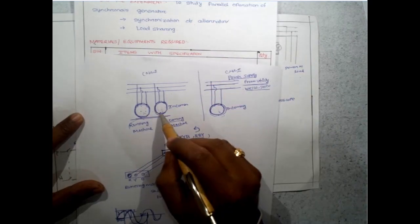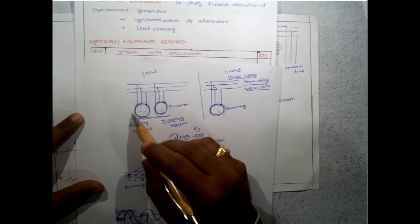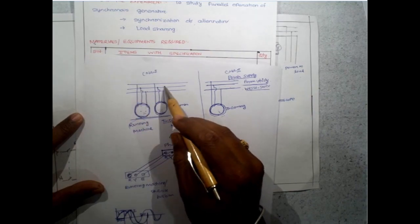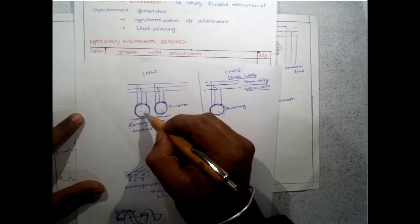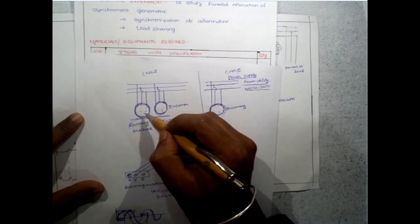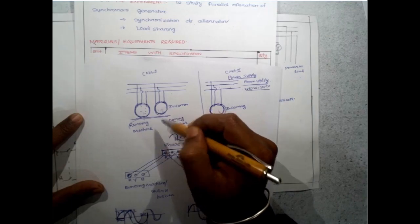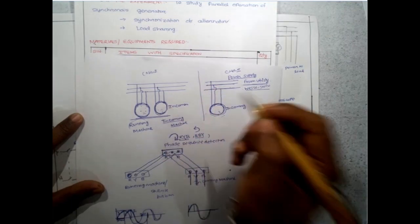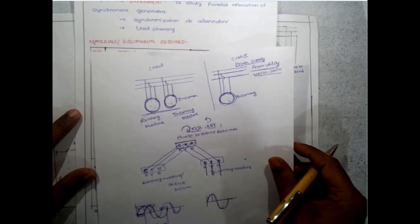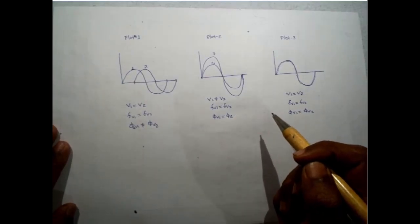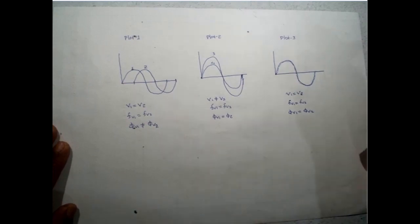This is another set of practical where a machine is already connected to the bus bar and we are going to add another machine. The machine already there in the system serving some load is called the running machine. The machine we are going to add is called the incoming machine.